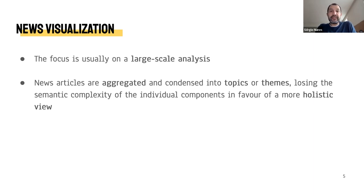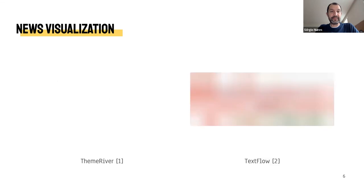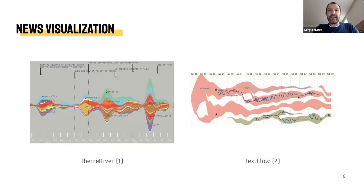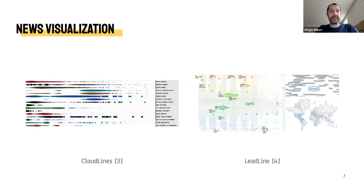News articles are often aggregated into topics or themes, which allow a broader view of the news landscape, but which discard the individual complexity of each textual artifact present in the input data. Here are two examples — Theme River and Text Flow — where we see these topics and themes visualized as river views. Two additional examples, Cloud Lines and Lead Lines, use pixel-based views to show these high-level topics.